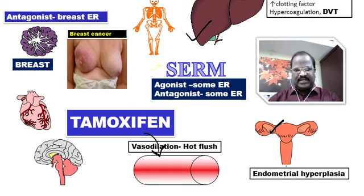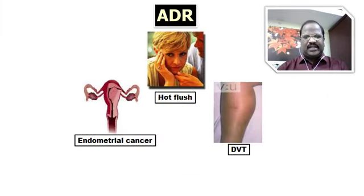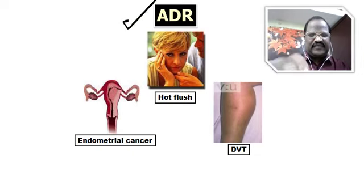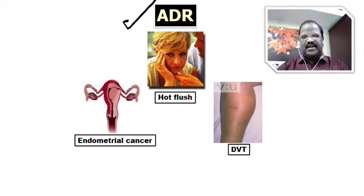The take-home message: tamoxifen is useful for treatment of ER-positive breast cancer. At the same time, the three important adverse effects of tamoxifen are: number 1, hot flushes; number 2, endometrial cancer; number 3, deep vein thrombosis.